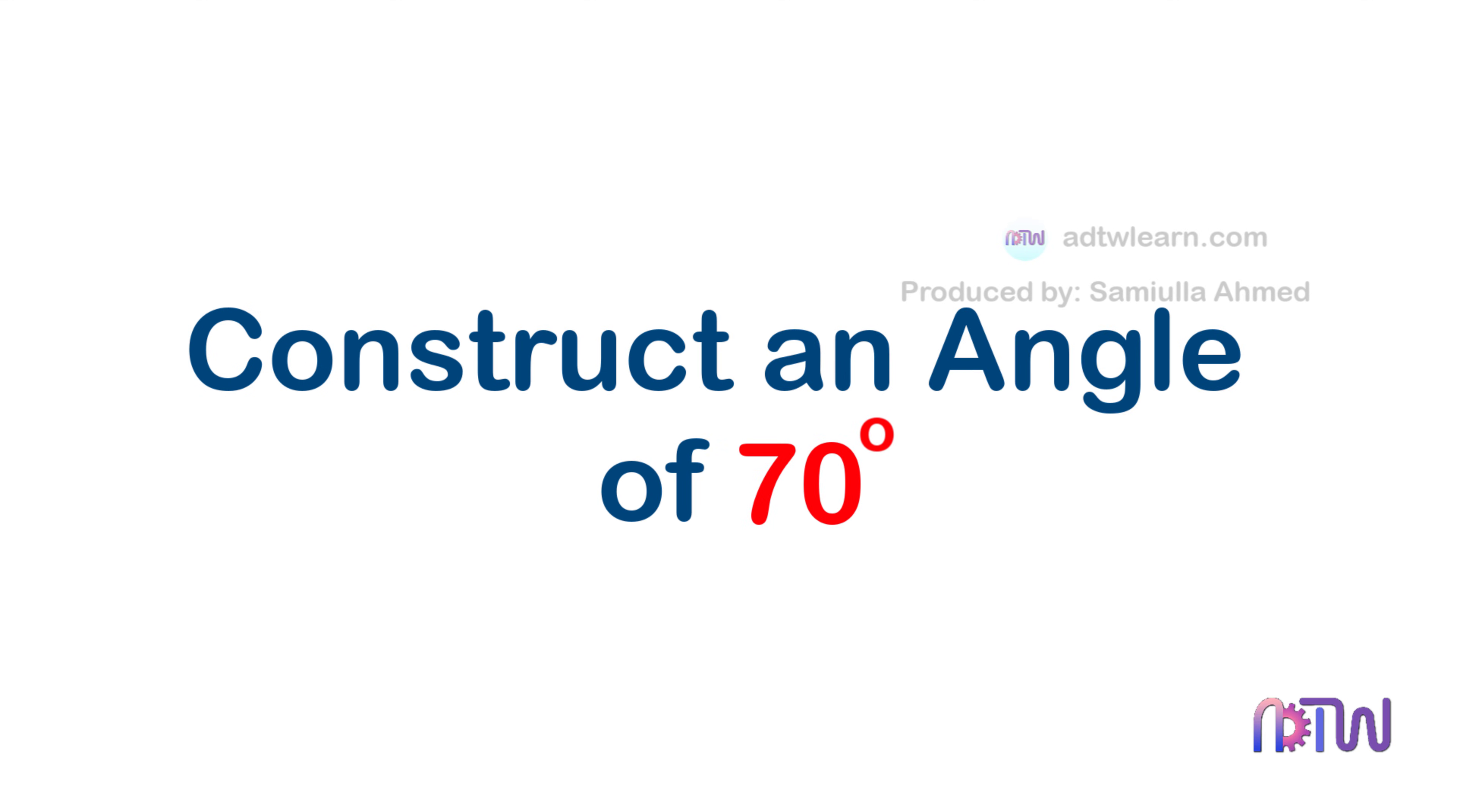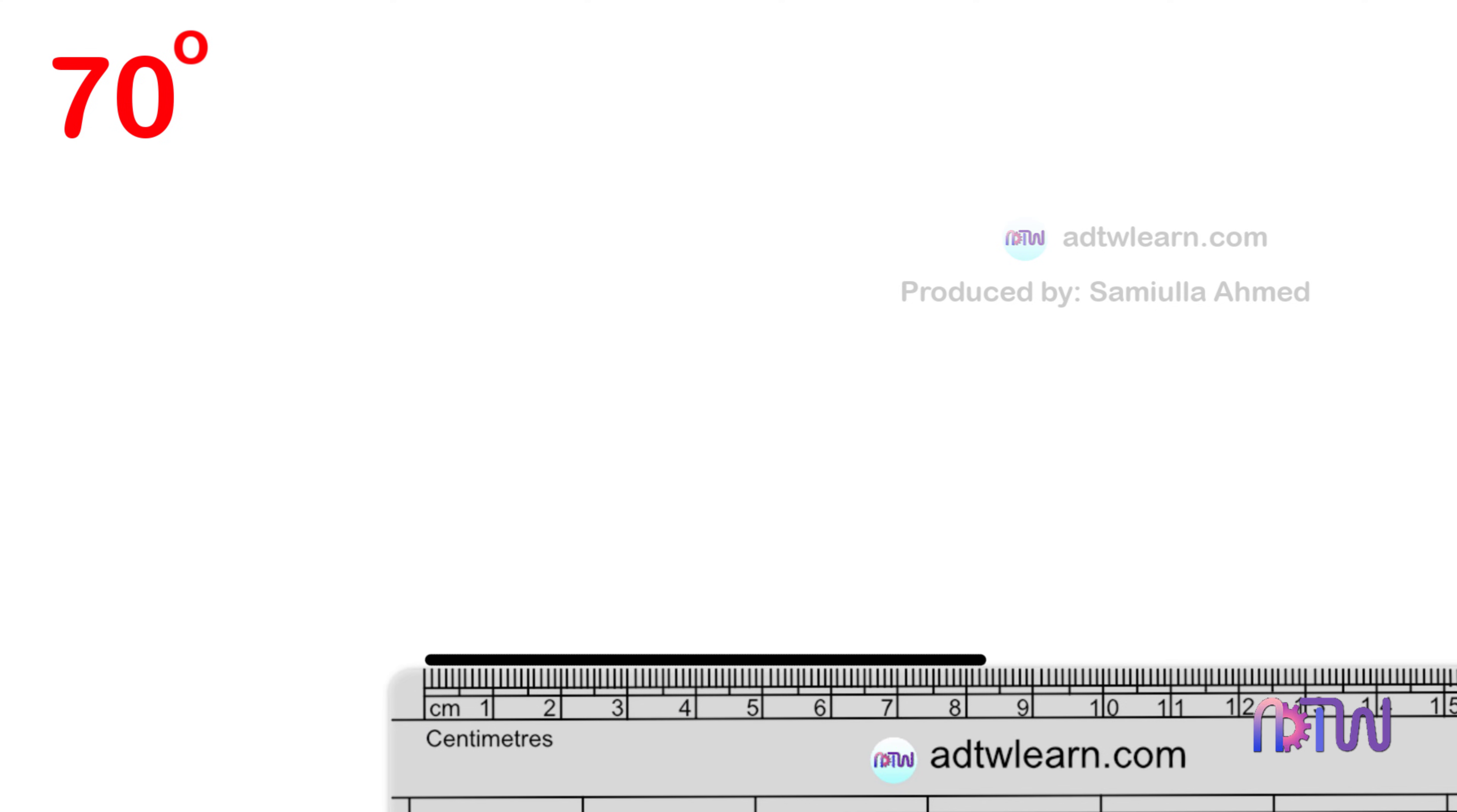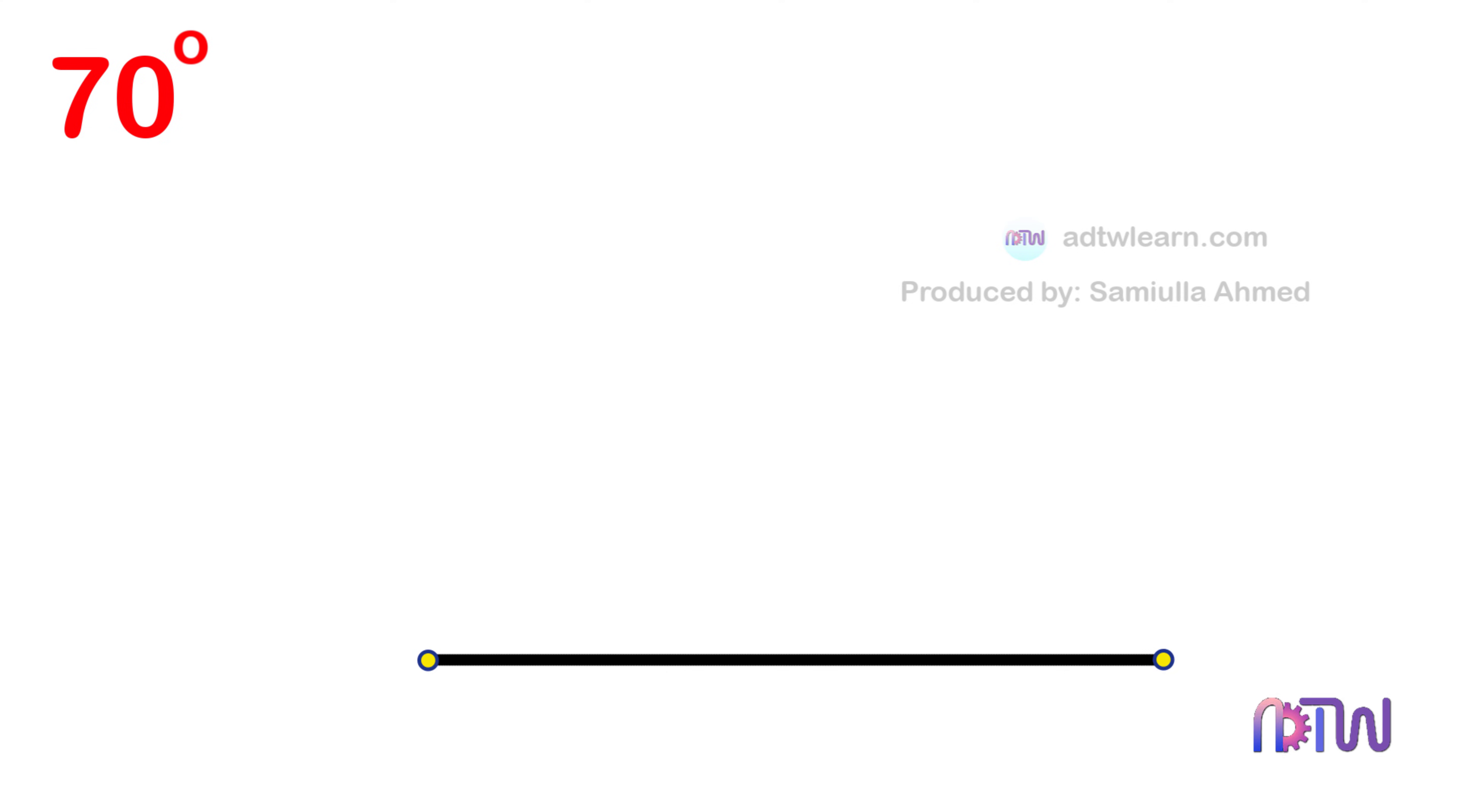Construct an angle of 70 degrees. In this video we will learn how to construct an angle of 70 degrees. First we need to draw a line segment. To do so, take a ruler and draw a line segment and label the endpoints as A and B.